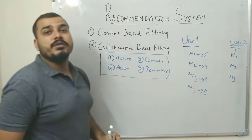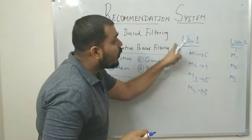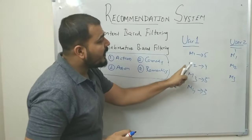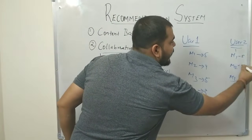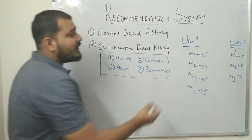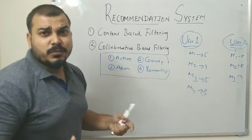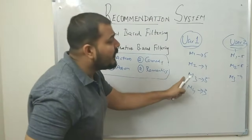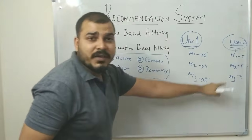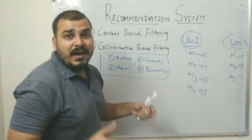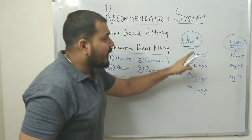In collaborative filtering, the system tries to find the behavior of the user — it does not look at what type of movies they are. Since User 1 watched M1, M2, M3 and gave good ratings, and User 2 also watched M1, M2, M3 and gave good ratings, the system concludes that these two users have similar characteristics and like the same kinds of movies.